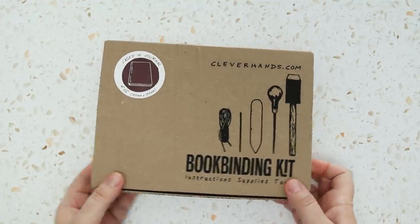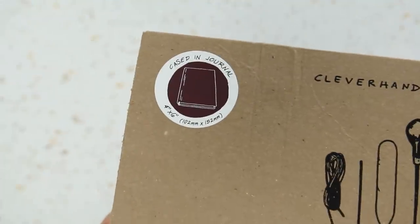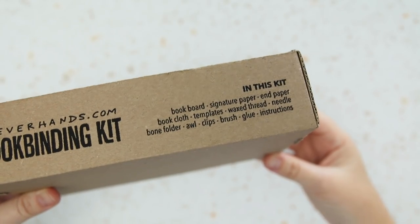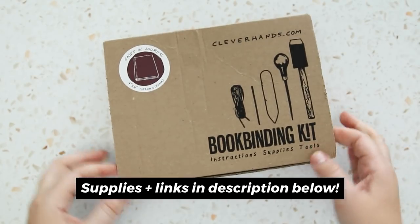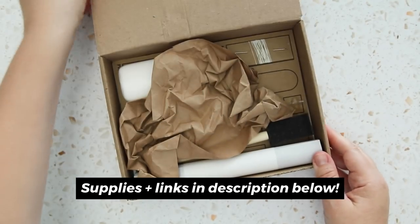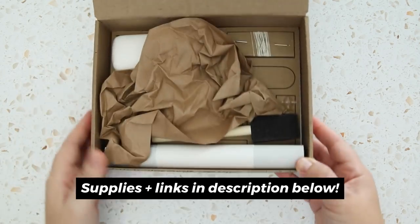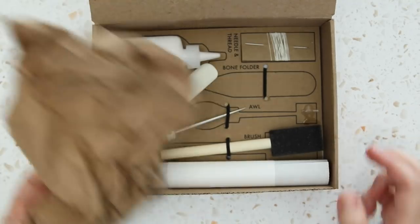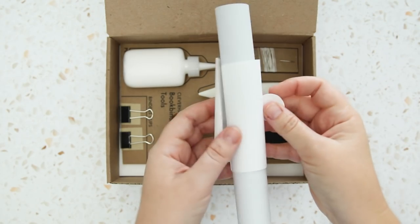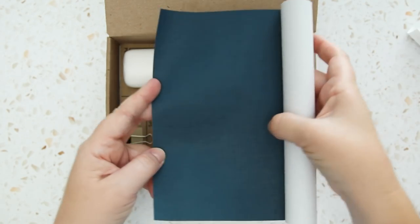Here's how the box arrived, and it includes materials and tools to make a 4x6 cased-in journal. Some of the stuff inside got shifted around during the shipping process. That's okay. I do like that everything is labeled. The blue book cloth I chose looks a little bit darker in person.